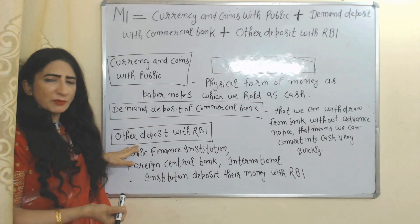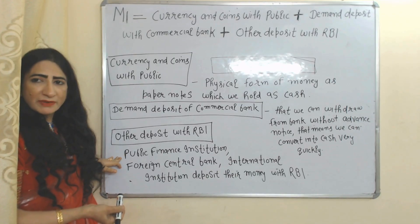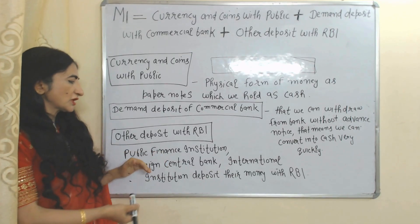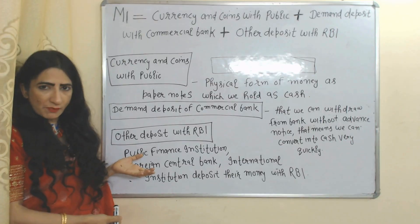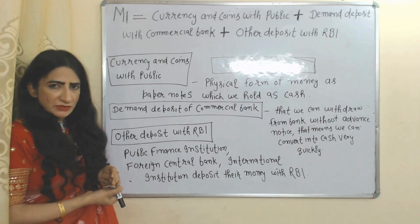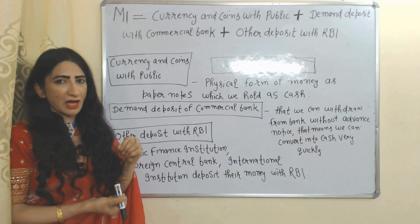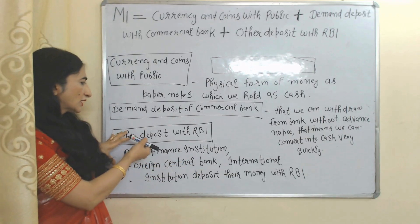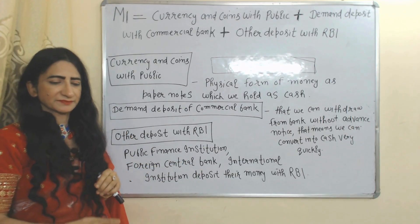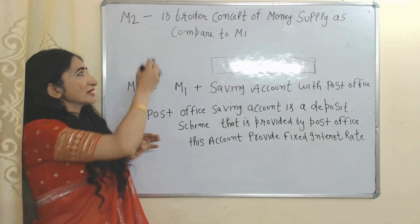The third component of M1 is other deposits with RBI. Sometimes public finance institutions, foreign central banks, and international institutions deposit their money with RBI — this is called other deposits with RBI.